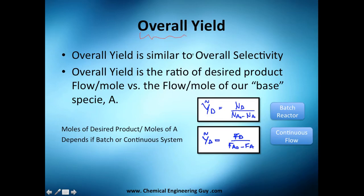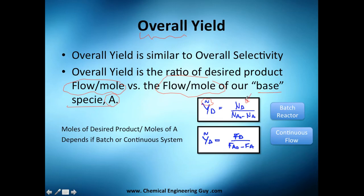We will also have overall yield, very similar to overall selectivity — we use the same symbol. For continuous flow reactors we talk about flow versus flow, and for batch reactors we talk about moles versus moles. We use base species A: the moles produced of our desired product versus the moles that react. This has something to do with conversion, and we're going to see how our desired product increases or decreases as conversion progresses.